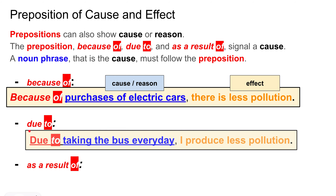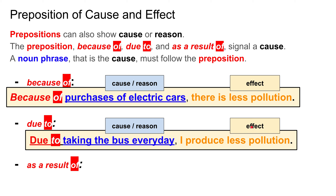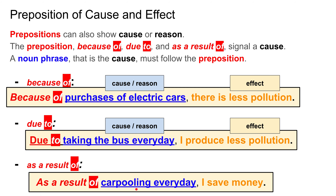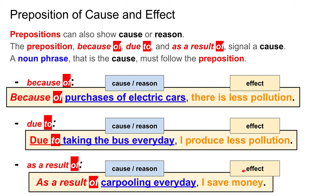Looking at 'due to': 'Due to taking the bus every day, I produce less pollution.' 'Due to taking the bus every day' is the cause, and 'taking the bus every day' is the noun phrase. 'I produce less pollution' is the effect. For 'as a result of': 'As a result of carpooling every day, I save money.' 'Carpooling every day' is the noun phrase — the cause. 'I save money' is the effect.